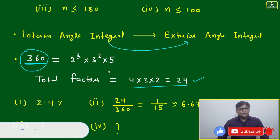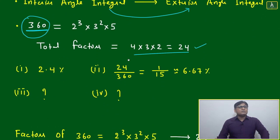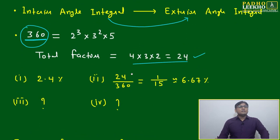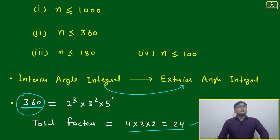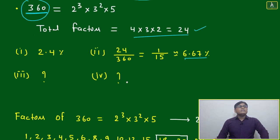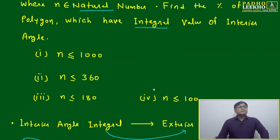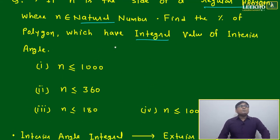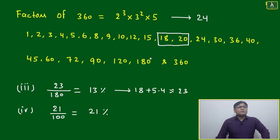The question asks: find the percentage of polygons which have an integral value of interior angle. If n is less than 1000, only 24 values give an integral interior angle, so the percentage is 24 out of 1000, which is 2.4%. But the question has multiple parts with different conditions: n < 1000 gives 2.4%, and n < 1000 in another framing gives 6.67%. We need to find all four values.